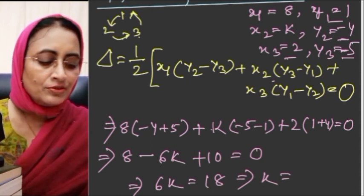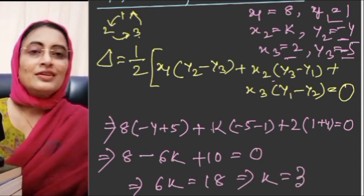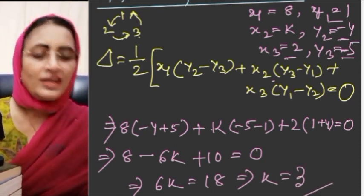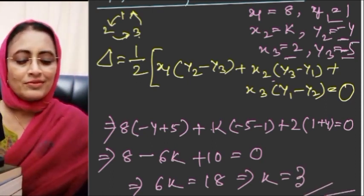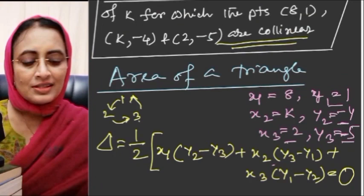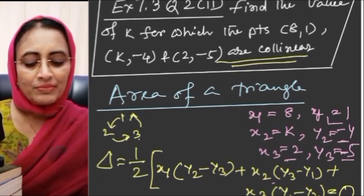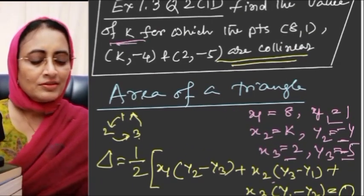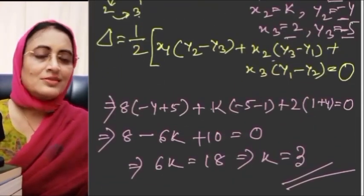From 6k = 18, we get k = 3. So the value of k is 3. This is our answer.